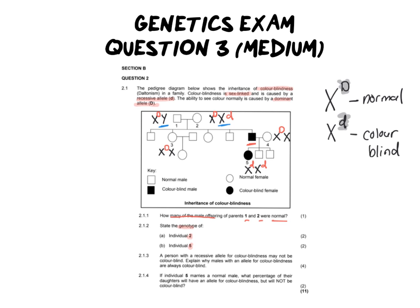And so now that we've worked that out we can go ahead and actually answer our question down here for question 2.1.2. What is the genotype? Well number two is going to be X capital D X lowercase d and individual five's genotype is going to be two lowercase d's.